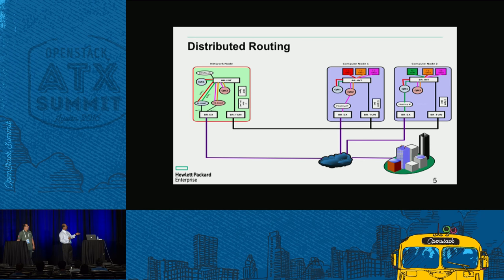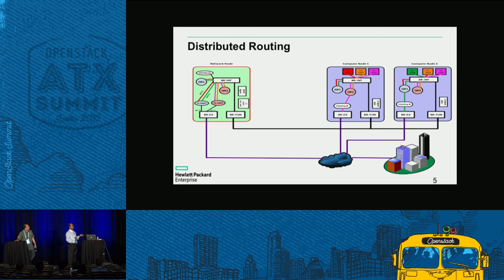For inter-node VM communication, traffic gets routed on the source compute node and flows to the destination node. For floating IP traffic, a floating IP namespace is created on the compute node, connected to the router namespace. This floating IP namespace is shared between all tenants and created per external network, so floating IP traffic bypasses the network node entirely.